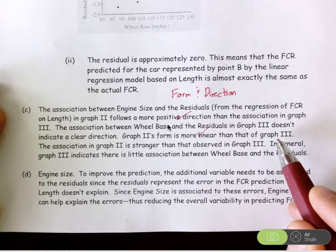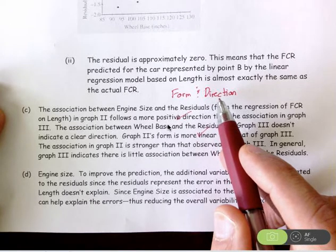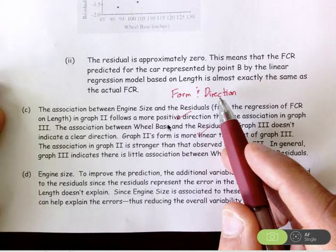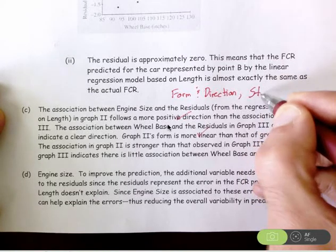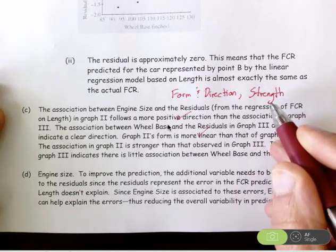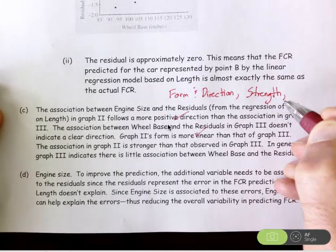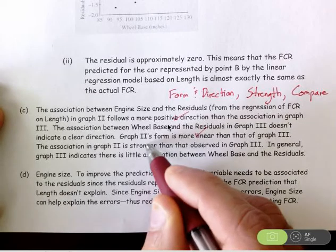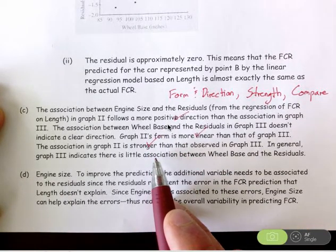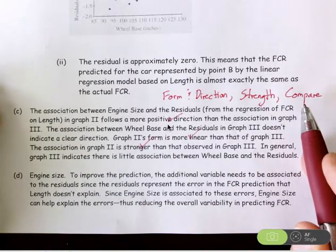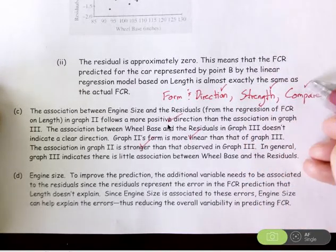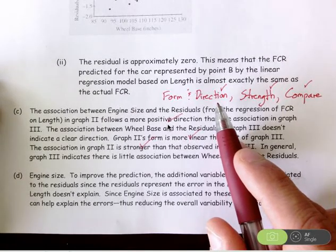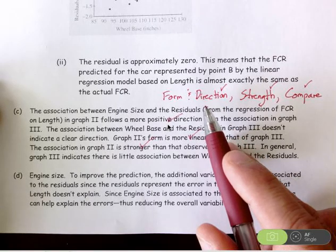Something to think about: in terms of form, to get credit for this component, you had to use the word 'linear.' The second component is describing the strength of the association for both graphs. That's important because strength bears directly on the last part of the question. And then last, you had to compare between the two graphs — being explicit about comparing between the two graphs throughout your answer. An essentially correct answer has all three of these components. A partially correct answer would include only two of these three. An incorrect answer would include only one or none.